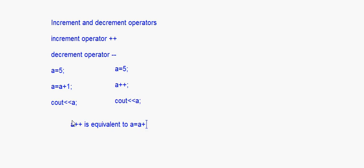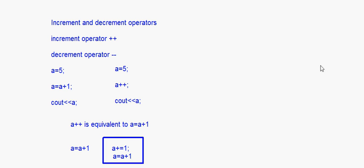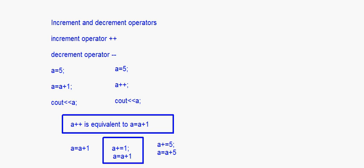So a++ is equivalent to a = a + 1. There is also another form: a += 1, which also means a = a + 1. But unlike a++, which is specifically for adding 1, the compound assignment can use any number — for example, a += 5 means a = a + 5, or a += 100. So a++ is specifically for incrementing by 1, while a += n allows incrementing by any value.